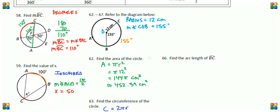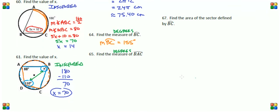So to find the measure of arc BAC, all we have to do is take the total measure of the circle, 360 degrees, subtract the measure of arc BC, which is 155 degrees. And we end up with 205 degrees.